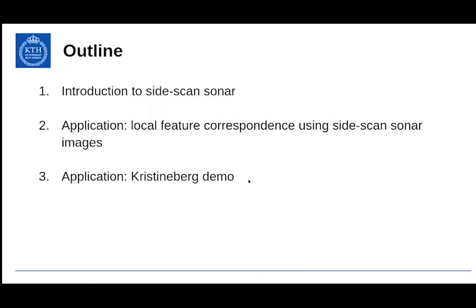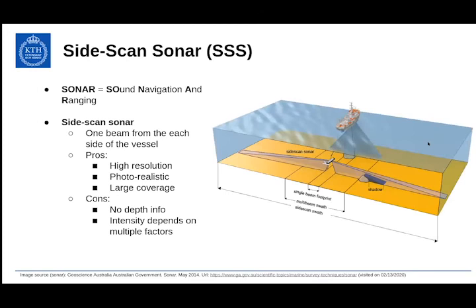Let's start with the introduction to side scan sonar. Sonar stands for Sound Navigation and Ranging. As the name suggests, it means we are using the transmission and reflection of acoustic waves to map the underwater environment. In this image to the right, you can see three types of sonars: side scan sonar, single beam, and multi-beam sonar, along with their swath, which is the horizontal segment on the seafloor that they are capable of covering.